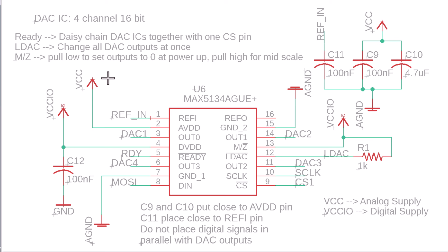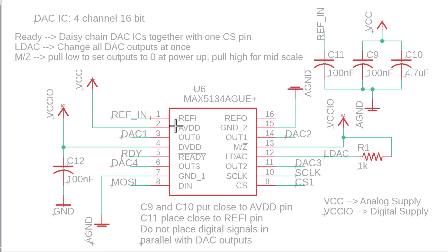VCC is 5 volts and it's the analog supply — it's supposed to be a very low noise supply coming from a low noise linear regulator. VCCIO is the digital supply, also 5 volts, coming from the same linear regulator, but there is filtering in between them to ensure noise from the digital communication doesn't affect the analog circuitry in the DAC. That's why we have those two divided — the data sheet tells you to do this: AVDD for analog and DVDD for digital.